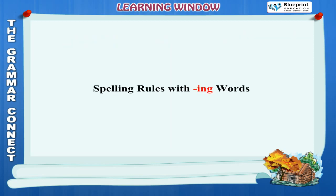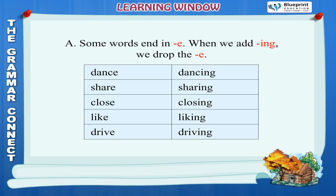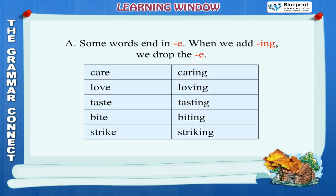Spelling rules with ING words. Rule A: Some words end in E. When we add ING, we drop the E. Examples: Dance→Dancing, Share→Sharing, Close→Closing, Like→Liking, Drive→Driving, Care→Caring, Love→Loving, Taste→Tasting, Bite→Biting, Strike→Striking.